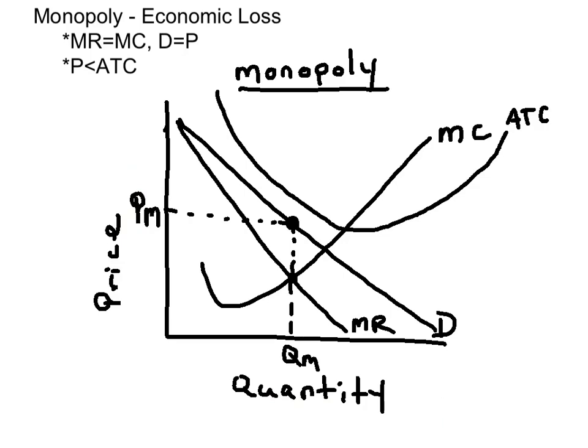When I draw a monopoly, I like to start with the demand curve — downward sloping — label it D, and then draw the marginal revenue curve underneath.